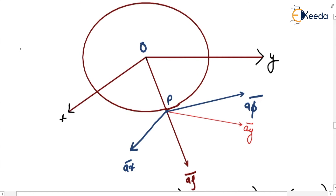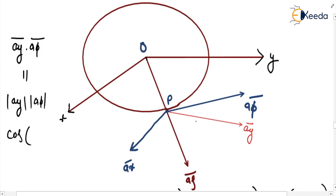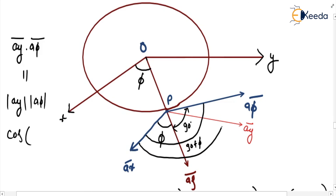Now we calculate a_y dot a_phi. The angle between a_x and a_phi is 90 plus phi, and the angle between a_x and a_y is 90 degrees, so the angle between a_y and a_phi is (90 plus phi) minus 90, which equals phi. Therefore a_y dot a_phi equals mod a_y times mod a_phi times cos phi, and since both are unit vectors, a_y dot a_phi equals cos phi.